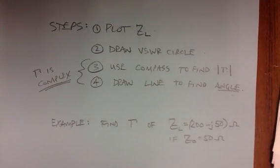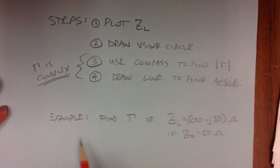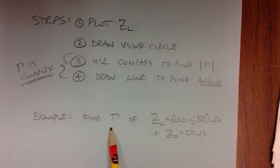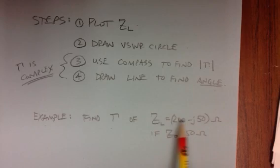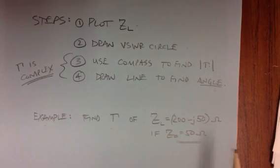So I'm doing this assuming that you know how to plot an impedance and find the VSWR circle, which is in previous videos. So let's do this. We have the example here. Find the reflection coefficient of this impedance, assuming a characteristic impedance of 50 ohms.